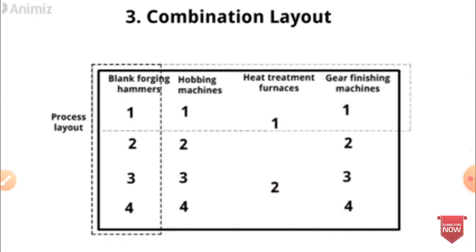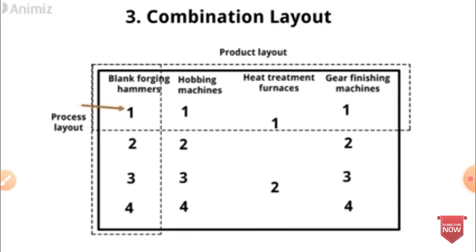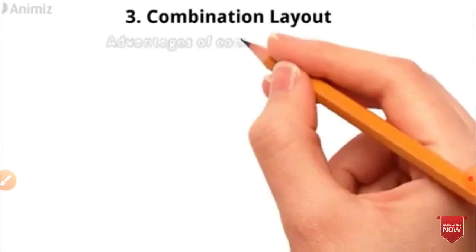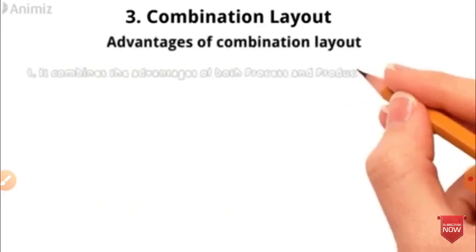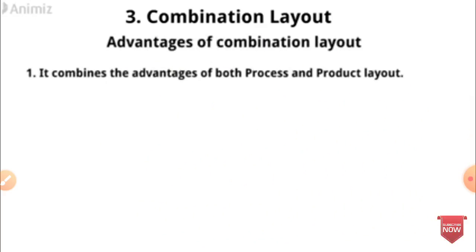Example of Combination Layout: Blank, Broaching, Hammer, Hubbing machines, Heat Treatment Furnace, Grinding machines. The vertical columns represent Product layout and Process layout combined. The advantage is it combines the advantages of both Process and Product layout.